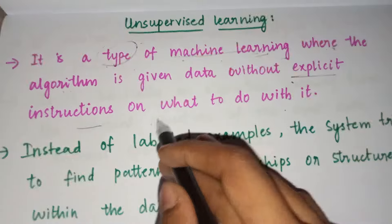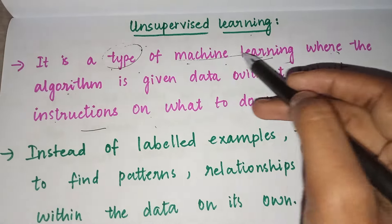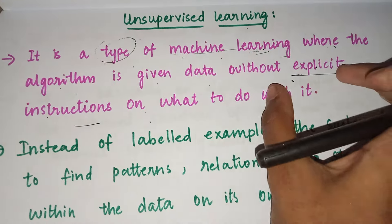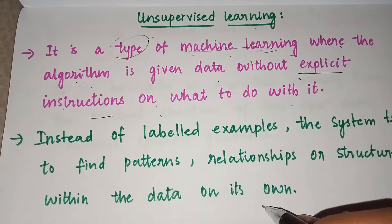on what to do with it. It is a type of machine learning where the algorithm is given data without explicit instructions on what to do with it.